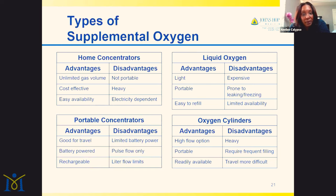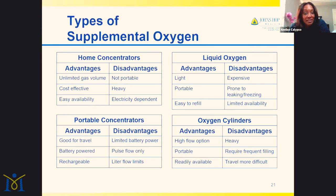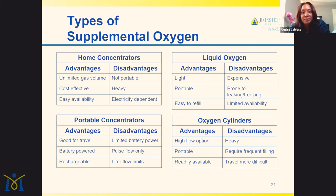The most popular of the four types are portable oxygen concentrators. Most people have seen a commercial for some sort of device. The advantages are they're great for travel, battery operated, and rechargeable. Disadvantages are limited battery power, they only deliver pulse flow oxygen, they have liter flow limits, and they can be cost prohibitive.